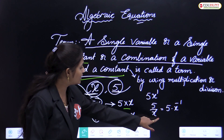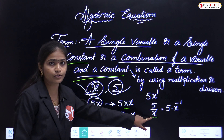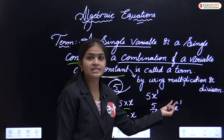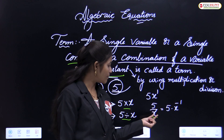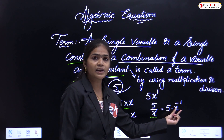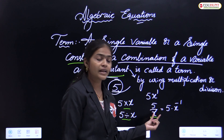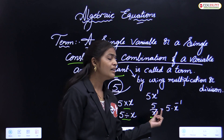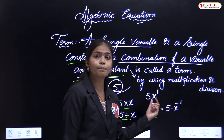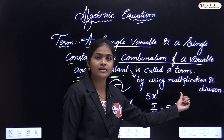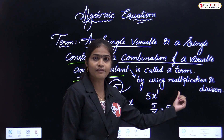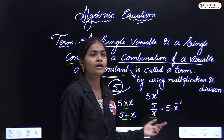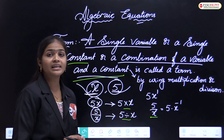For example, 5 by x cubed equals 5 into x to the power minus 3. And if the power is minus 3 in the denominator, it becomes plus 3 in the numerator. In that way we express terms. Now we will discuss the degree.